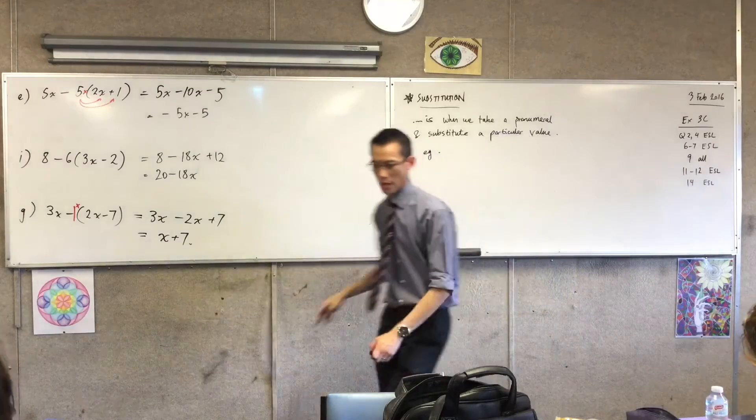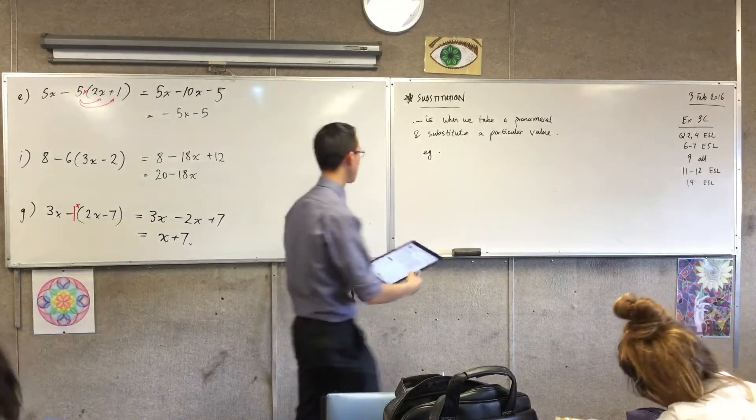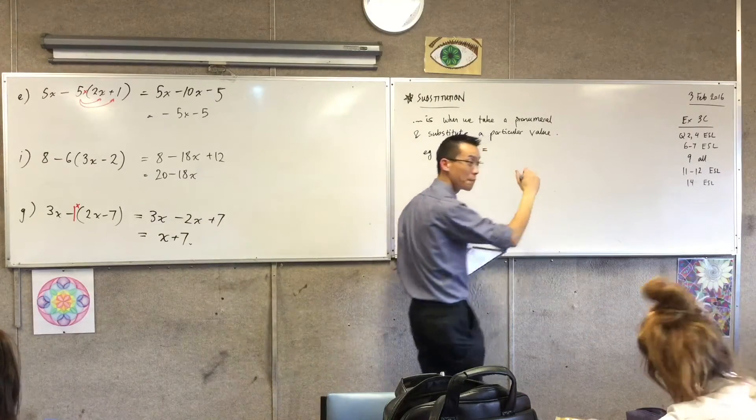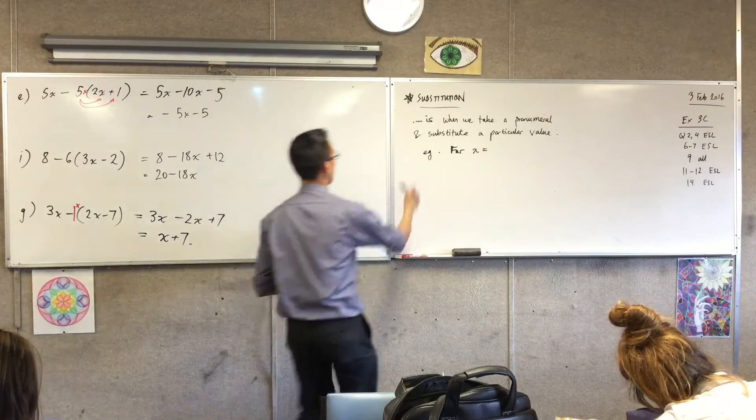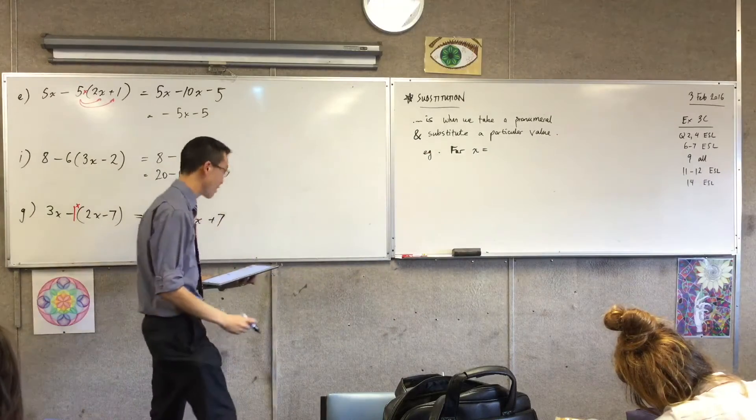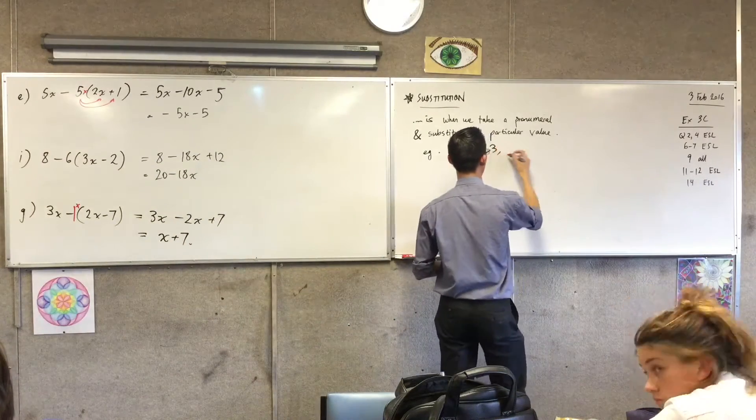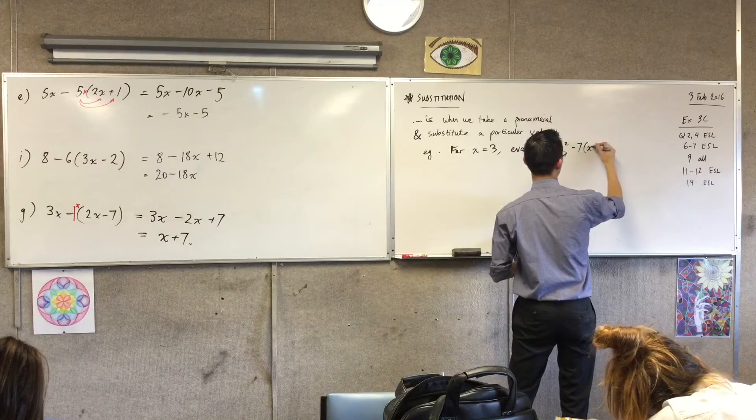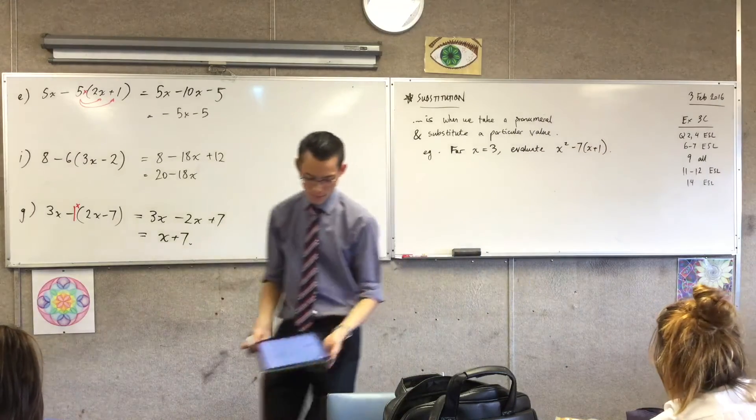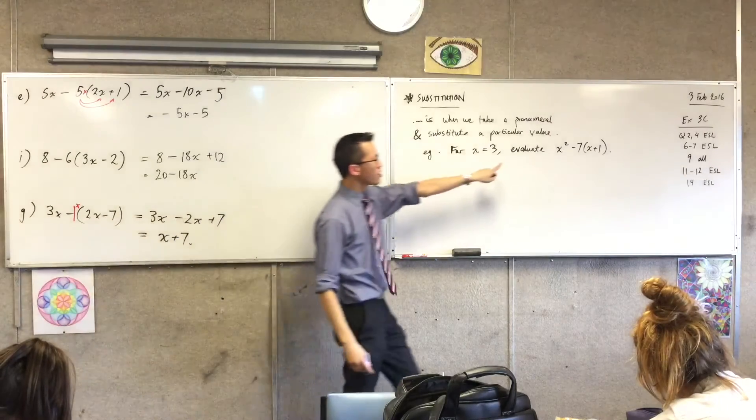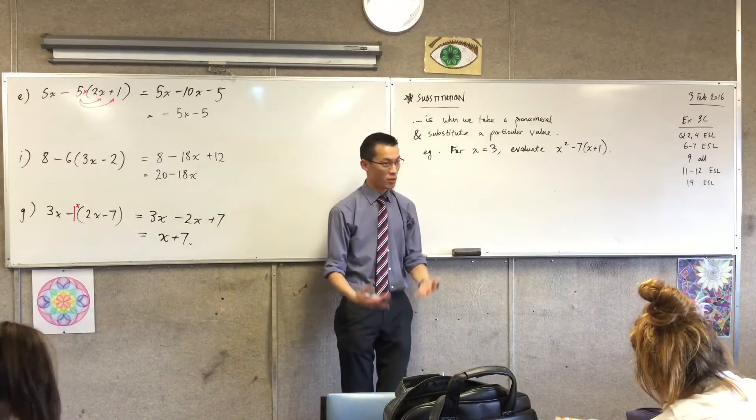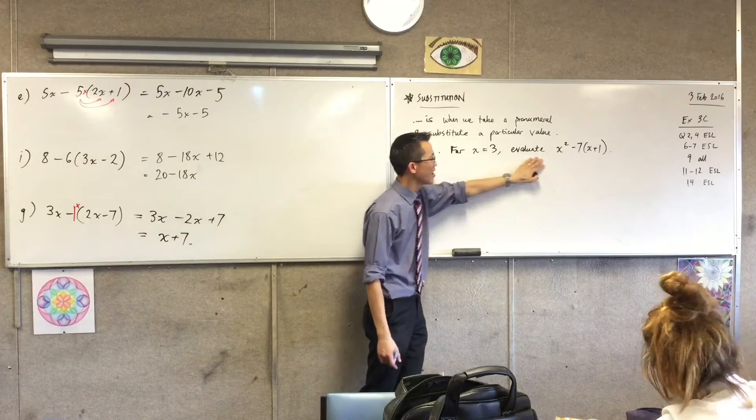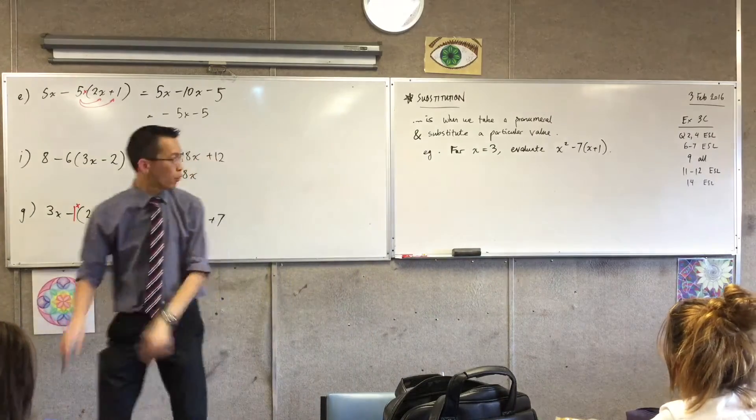For example, let's pick out one here. Start with a simple one. There's just the one kind of pronumeral here. It does get repeated, but there's only one type. So they give you a particular value. There it is. And they say here, evaluate, tell me how big this whole thing is once you put in X equals 3.